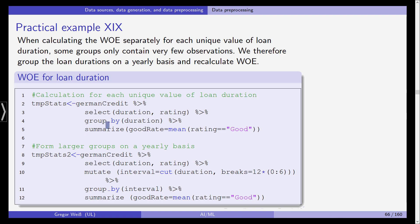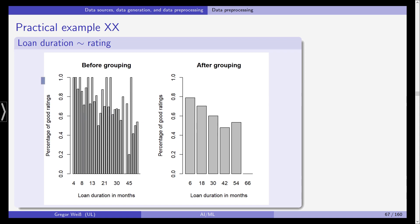So first of all, we calculate for each value of loan duration the good rating and we take the mean of the good rating in each of these groups, we group by duration. And then we form larger groups on a yearly basis and do the same and calculate the mean of the good rating. So this is on the left-hand side, before grouping. As you can see, there are some loan durations for which we don't even have an observation. And one would say there seems to be a trend that looks like this. And this becomes much clearer as soon as we group our observations into yearly bins of loan duration. And you can see the percentage of good ratings seems to decrease the longer the loan duration is.